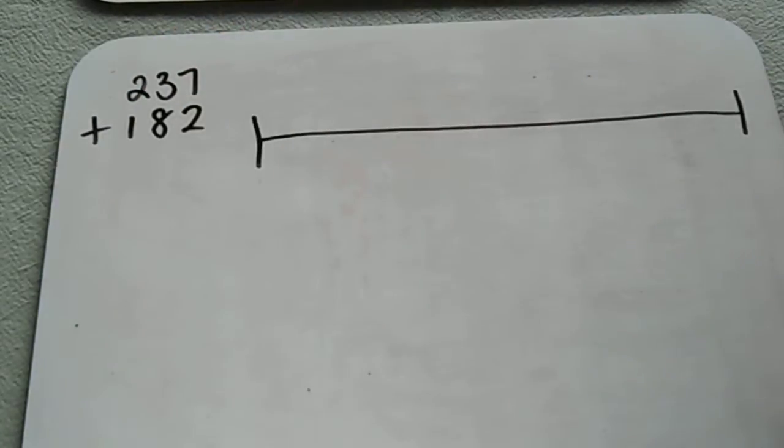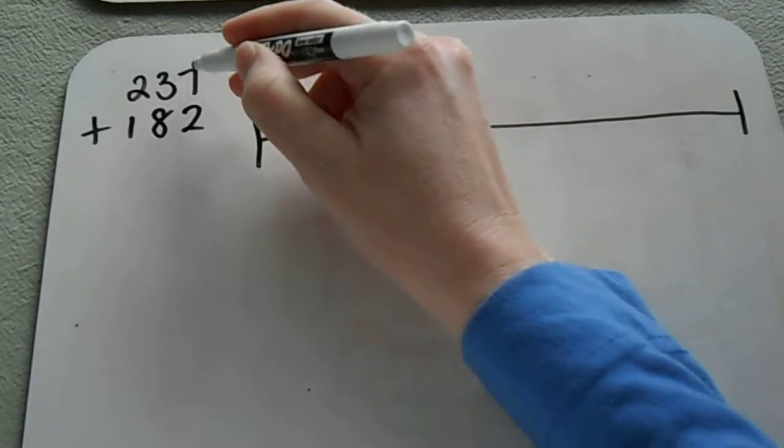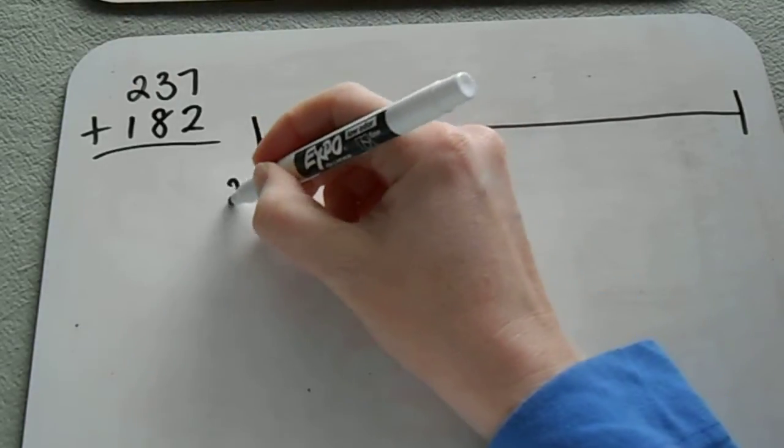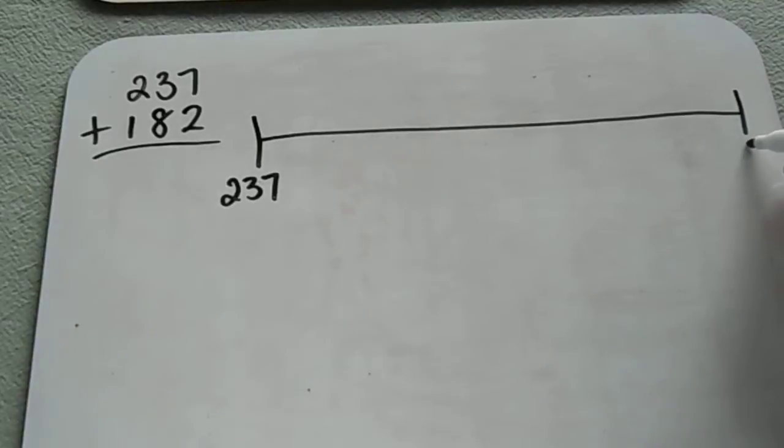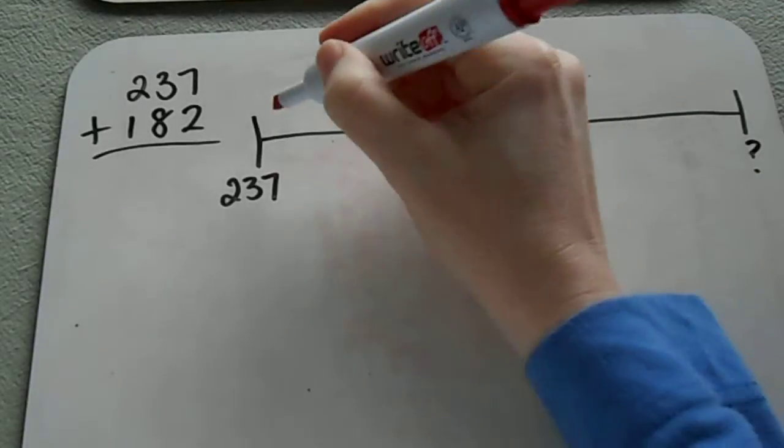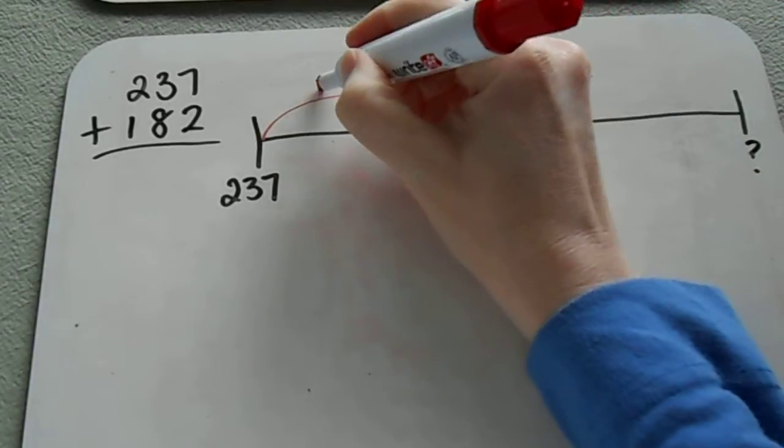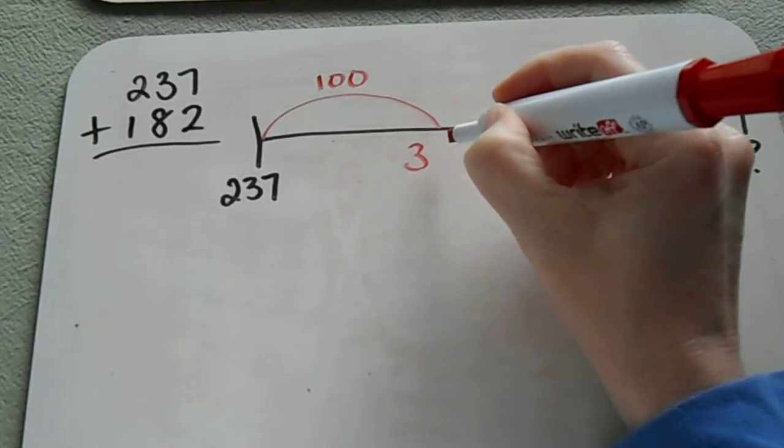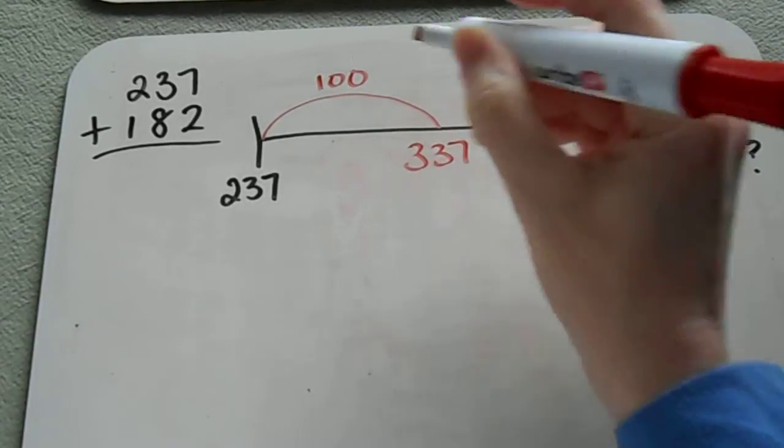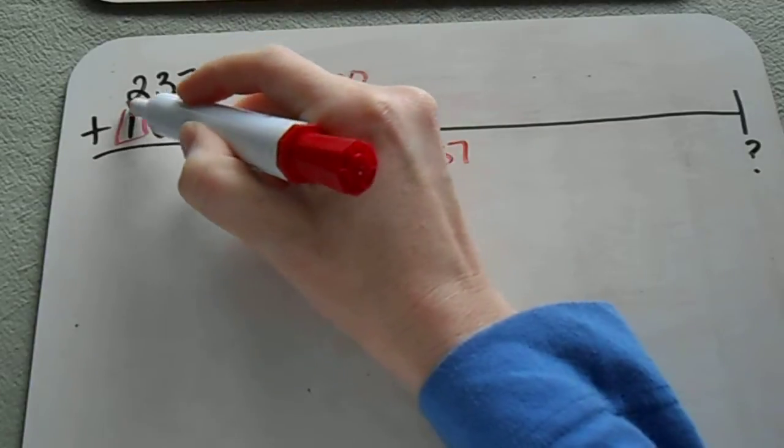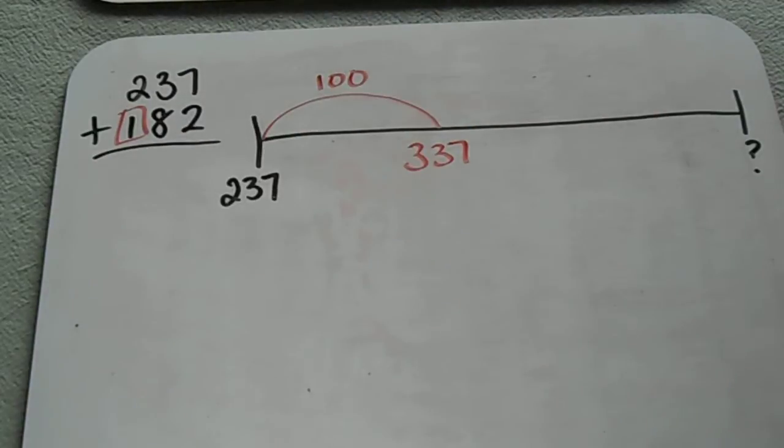So this is a little bit larger problem. I'm going to start with my top number 237. And I don't know what my ending number is but I know that I need to make 182 jumps. So from 237, if I make a jump of 100, that's going to put me at 337 and I got that 100 because that's what is in my hundreds place value.